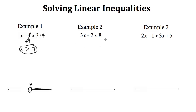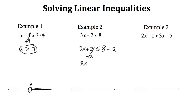In example 2 we have 3x plus 2 is less than or equal to 8. Again, treat this like an equal sign to isolate x. First, subtract 2 from both sides, leaving us with 3x is less than or equal to 6.